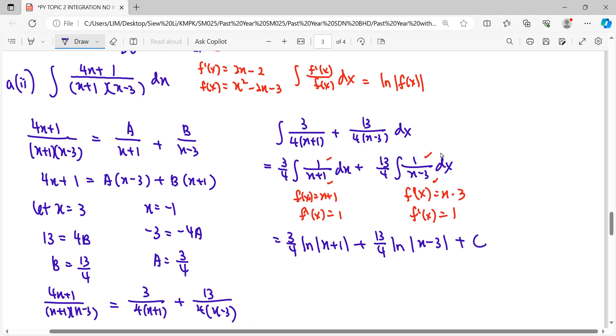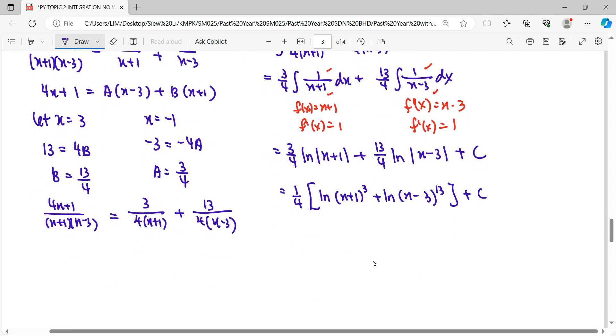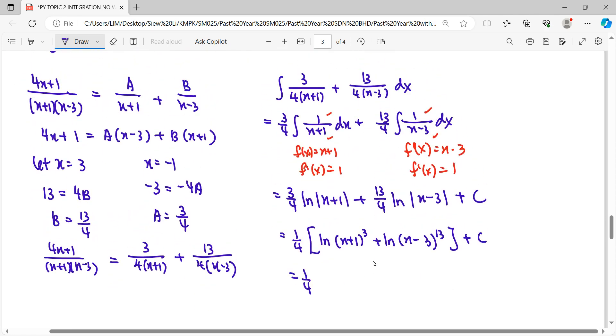If you want to try to simplify also can. So we will factorize out 1 over 4. Then this one will be ln(x plus 1) power of 3, plus ln(x minus 3) power of 13. So why power of 13? Because the coefficient 13 here, pull up using properties of log, will become power. So 3 here will pull up and become power, plus C. And ln plus ln we can simplify: it becomes multiplication, plus C.